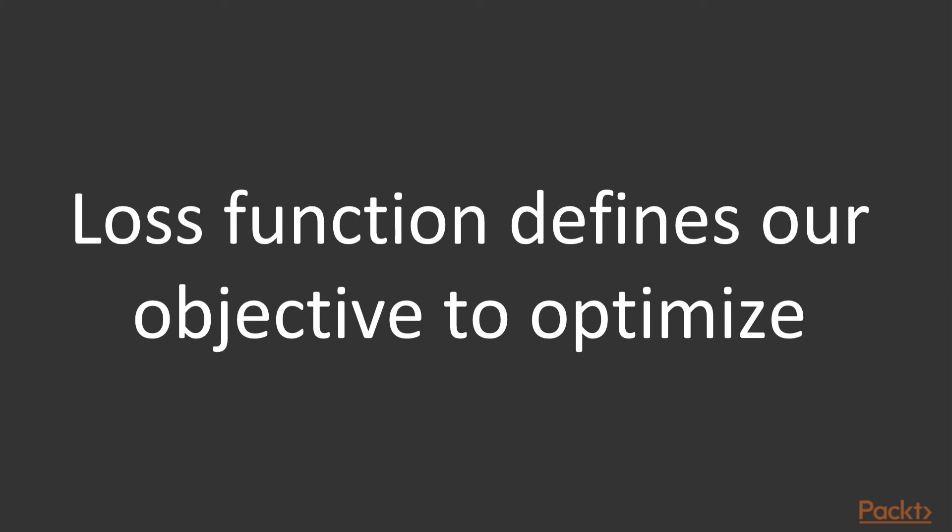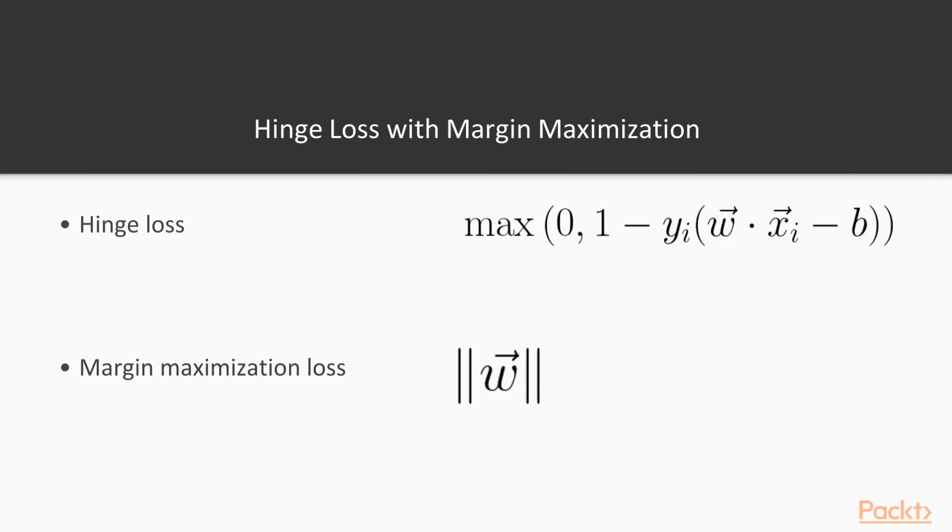So we've talked about this before. Our loss function defines our objective to optimize. This is how we end up finding our optimal solution. So we need to construct this loss function from these two key ideas, from max margin and from hinge loss. So we have our hinge loss expression up here and the margin maximization loss below. And to get our overall loss function, we really just add them together.